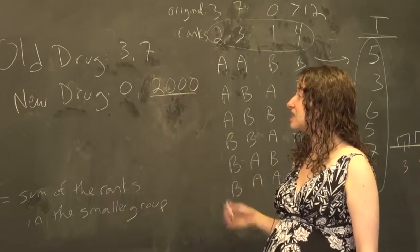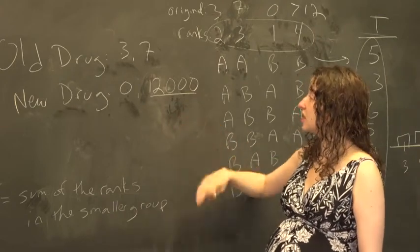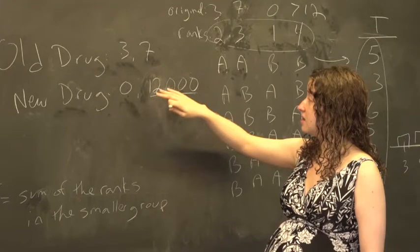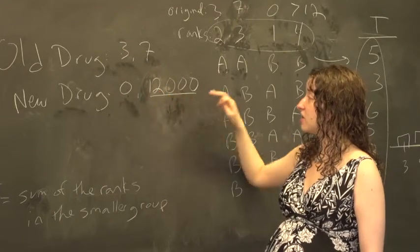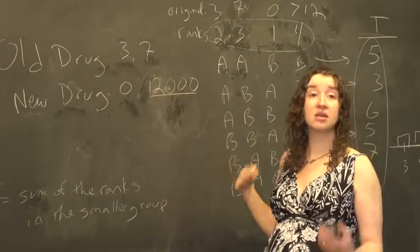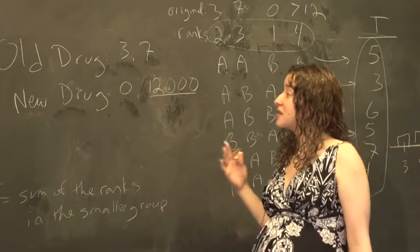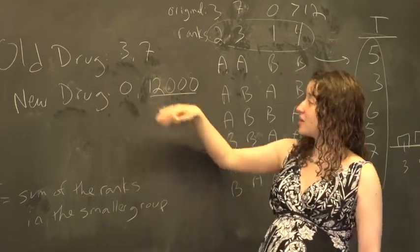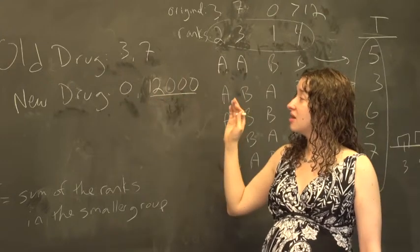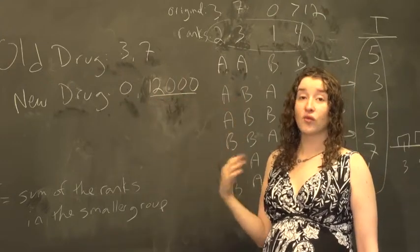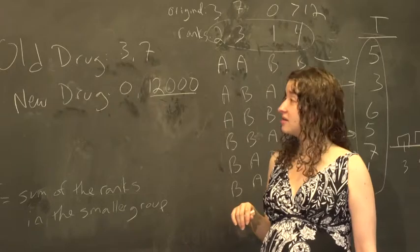This rank sum test is resistant to outliers because the results won't change, regardless of whether this number is 12, 120, 1200, or 12,000, 12 billion. We'll get the same answer. Now, that again means we're losing a little bit of information because we're not taking into account whether this number is 12 or 12 billion. But our answer is also not overly influenced by the fact that we have an outlier.